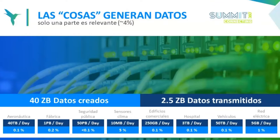Estamos transmitiendo 2.5 zetabytes de datos hacia la nube, pero la nube no requiere esa gran cantidad para crear inteligencia artificial o estadísticas suficientes. Por el contrario, localmente los dispositivos IoT sí necesitan transmitir una gran cantidad de datos que deben procesarse localmente en la ciudad, en el pueblo, en el área agrícola, donde esa información se procesa y se devuelve rápidamente al usuario convirtiéndose en data de gran utilidad.